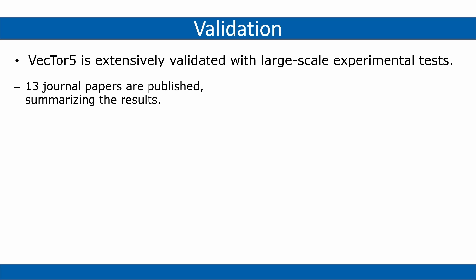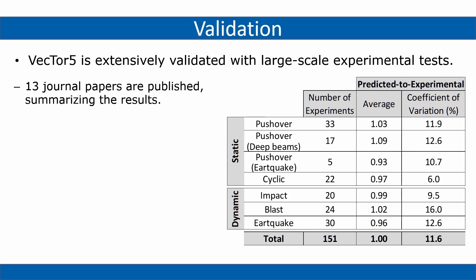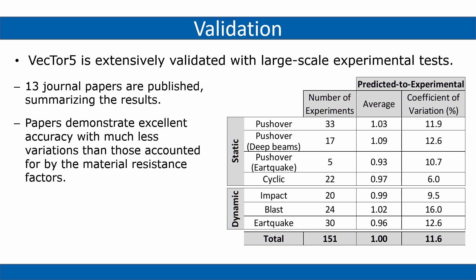Considering 151 large-scale experimental simulations, an average of 1.00 and a coefficient of variation of 11.6% is achieved for the predicted-to-experimental nominal strength ratios. These results show excellent accuracy with much less variation than those accounted for by the material resistance factors.